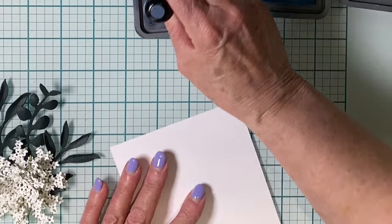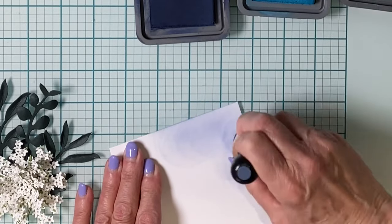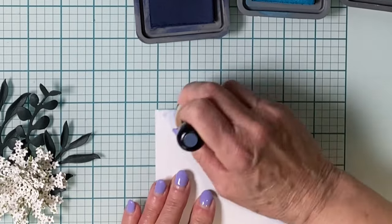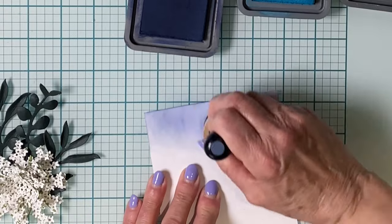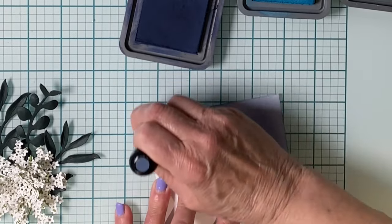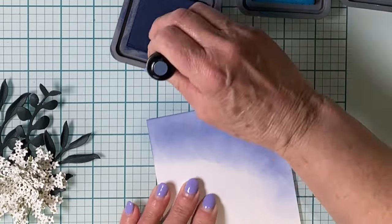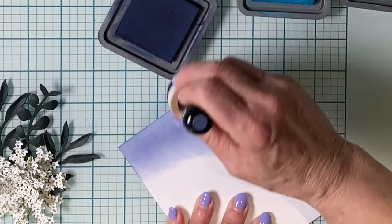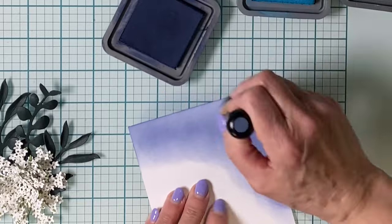Using Distress Oxide Inks on Bristol Smooth cardstock to create the background. I've got my panel upside down, but the Chipped Sapphire, that dark blue, is actually going to be placed where the flower will sit on the bottom left-hand corner of the panel.